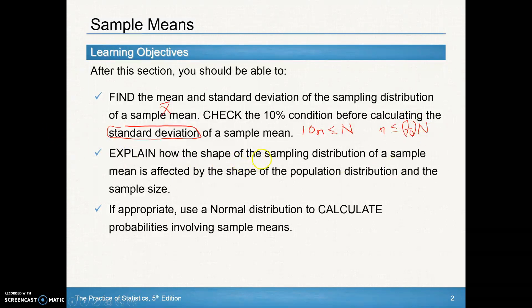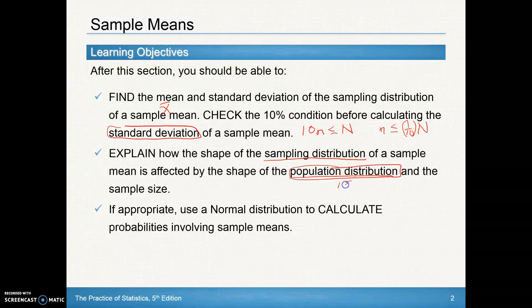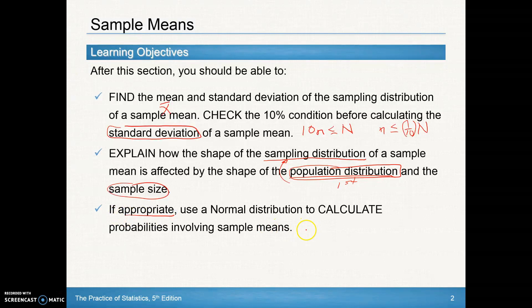We'll also have to explain how the shape of the sampling distribution of a sample mean is affected by the shape of the population distribution and the sample size. Once we know the population distribution and the sample size, we can determine what the sampling distribution of the sample mean looks like. And then if appropriate, we'll use the normal distribution — specifically the normal CDF on our calculators — to calculate probabilities involving sample means.